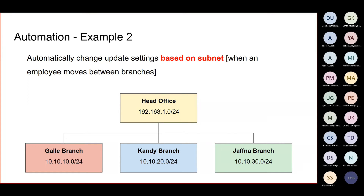To avoid that, we need to make sure that when employees move from branch to branch, they get the correct proxy settings — the proper policies implemented according to that branch. The purpose of this exercise is to identify the subnet and, based on which subnet the employee is connected to, apply the appropriate policies. We will use a dynamic HTTP proxy address. We already know how to identify subnets, so now it's about writing the use cases.